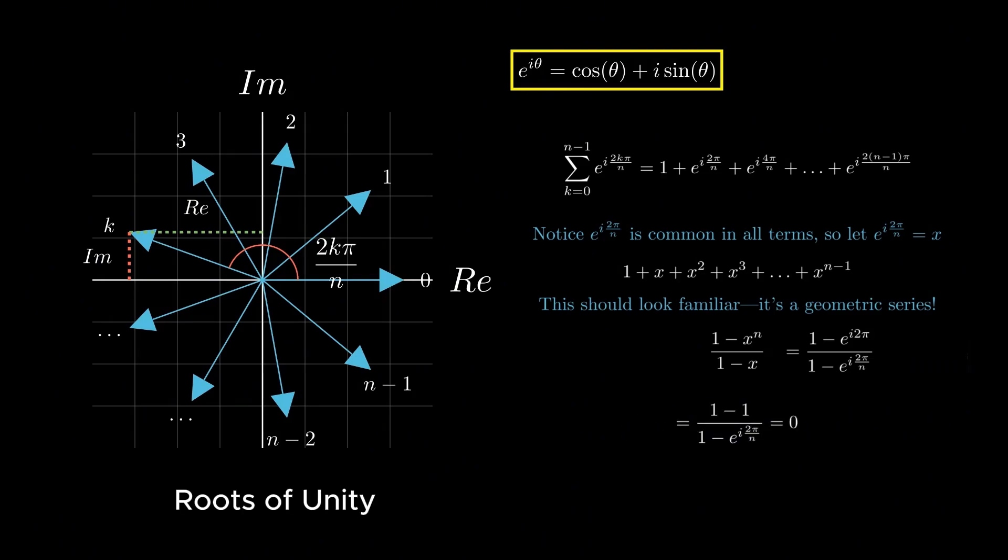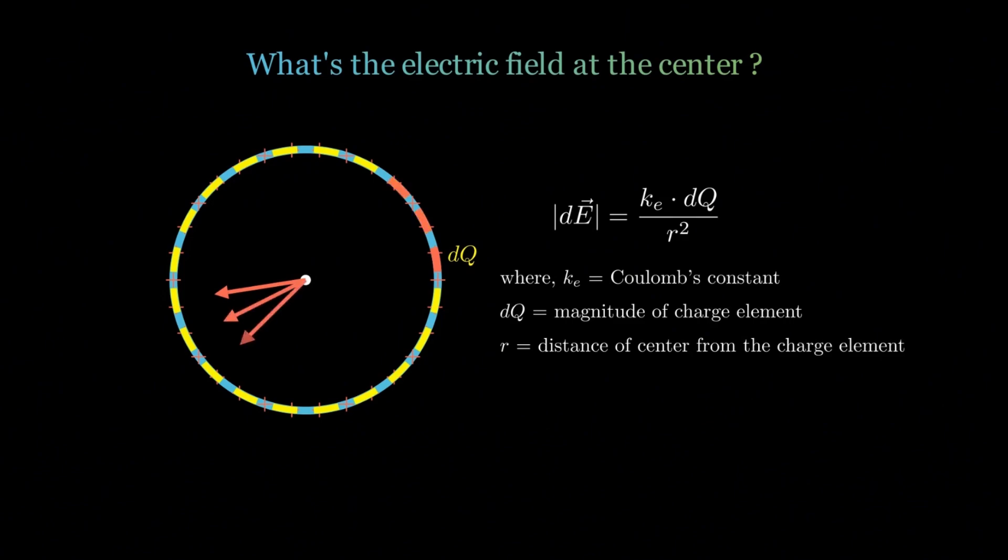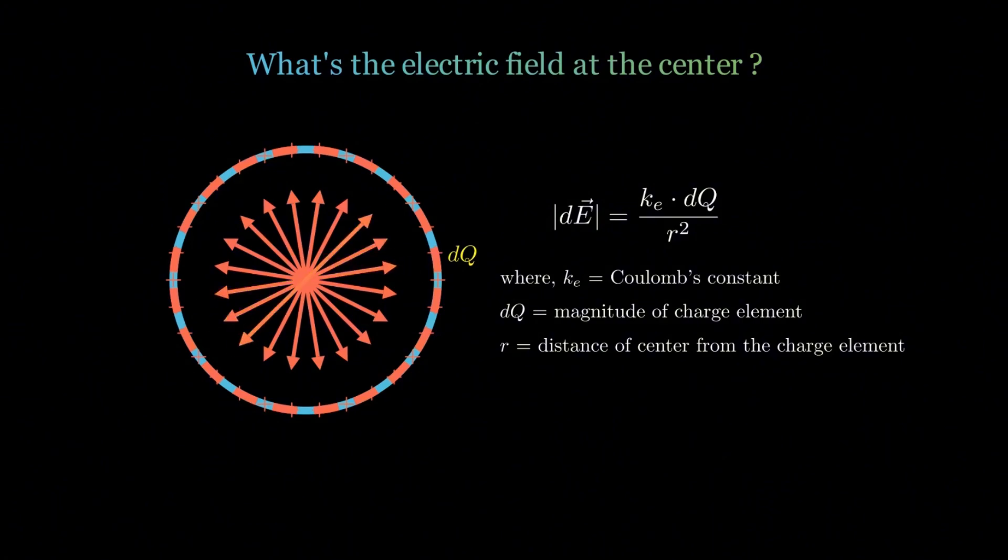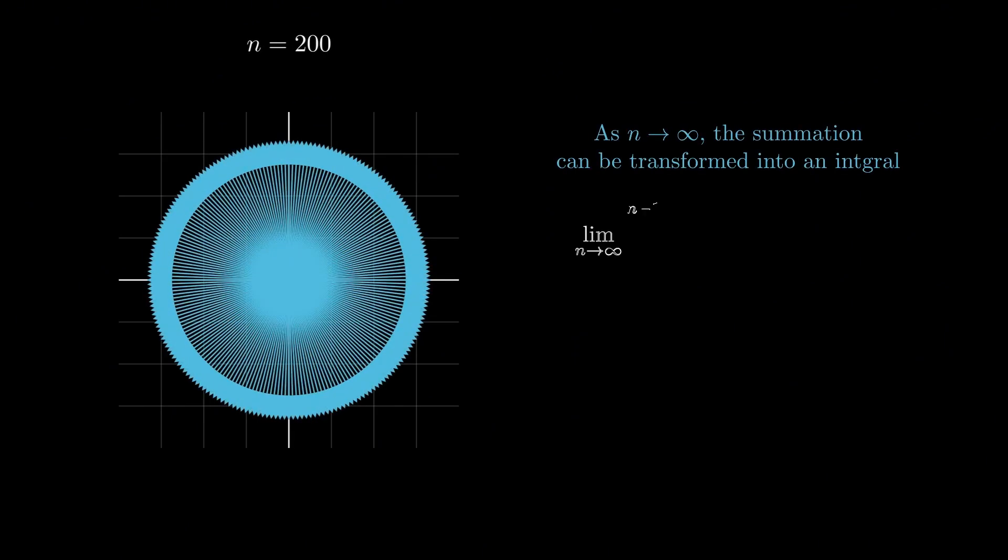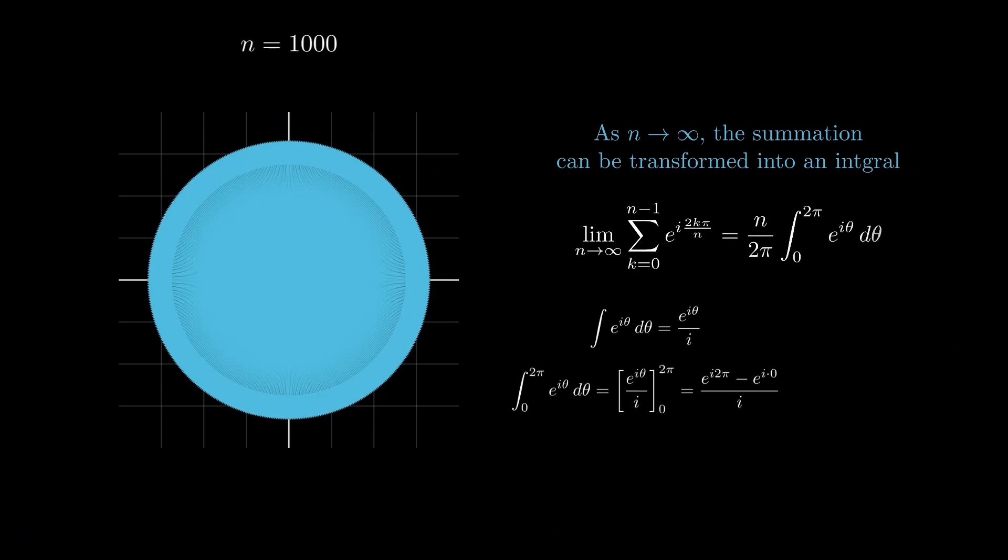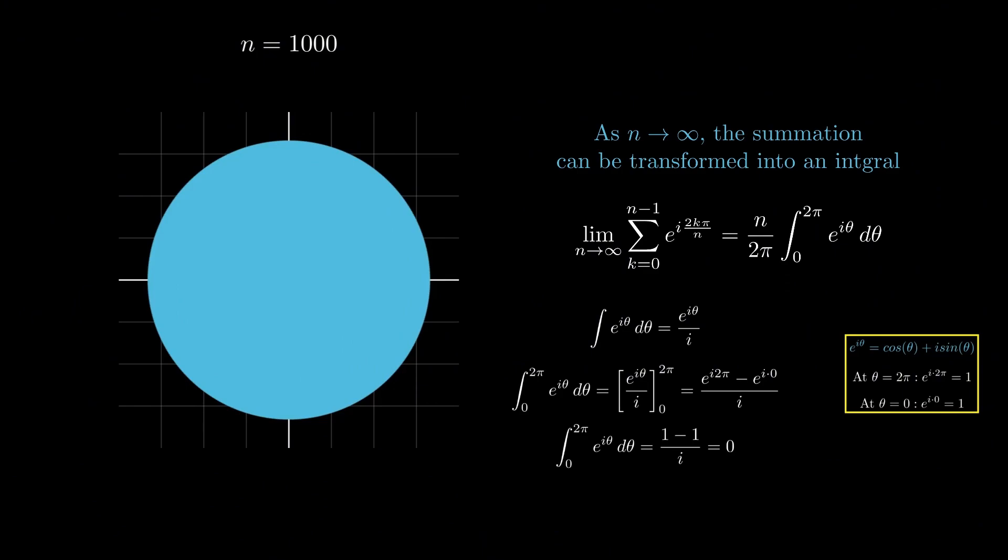This same principle can be extended beyond discrete vectors. We can prove that the total vector sum is zero for continuous distributions of vectors, like a charge ring, for example. Visually, we can think of it as composed of infinitely many tiny charge elements dq, and for every dq there is a directly opposite element dq' whose electric field cancels it out. Mathematically, as n approaches infinity, the discrete sum can be approximated by an integral using Riemann sums, and evaluating the integral gives zero. So even in the continuous limit, the result still holds.